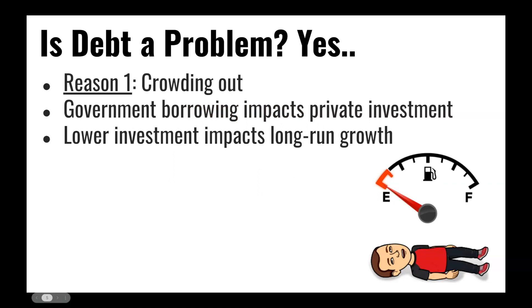One concern: debt can lead to a concept known as crowding out. In a situation of crowding out, the government's borrowing impacts the interest rate in the market, which can cause private investment to diminish from what it would have been if the government had not been borrowing money. Lower private investment does have an impact on long-run growth, and therefore is a concern for some people when looking at government debt.